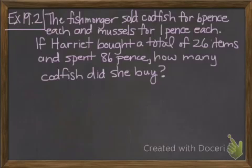We'll do another example. The fishmonger sold codfish for 6 pence each and mussels for 1 pence each. If Harriet bought a total of 26 items and spent 86 pence, how many codfish did she buy? This works for dollars but it also works for any other kind of money, value or different things like that. We set it up the same way. We have a number equation and a value equation.